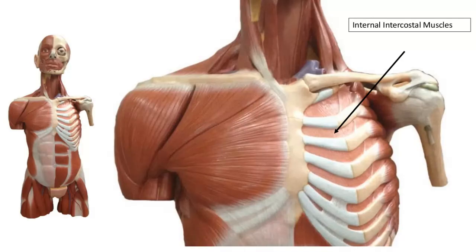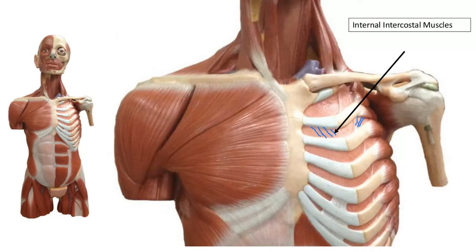Closer to the sternum we see the internal intercostal muscles. These muscle fibers go up and in. So: external intercostals go down and in; internal intercostal muscles go up and in.